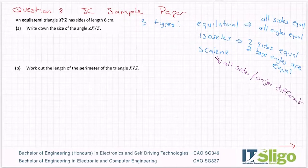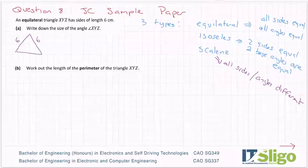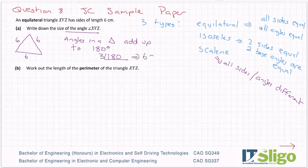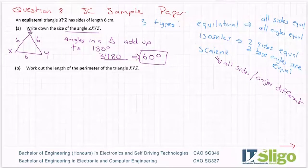Okay, so an equilateral triangle — you'll always know it because it's got the word 'equal' in it — has sides of length 6 centimeters. So 6, 6, and 6. Angles in a triangle add up to 180 degrees. If all the angles are equal, then divide that by 3, and all the angles are going to be 60 degrees. So it doesn't matter which one I put down as X, Y, Z — each one is going to be 60 degrees.